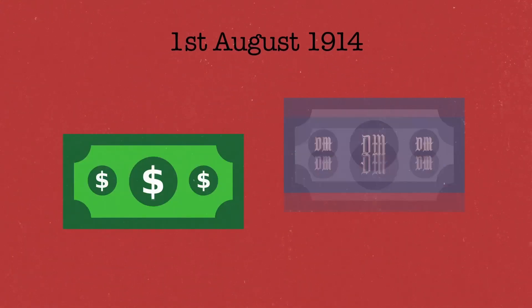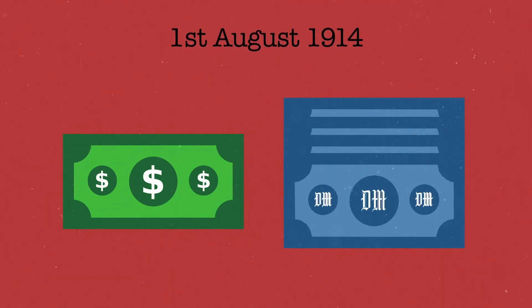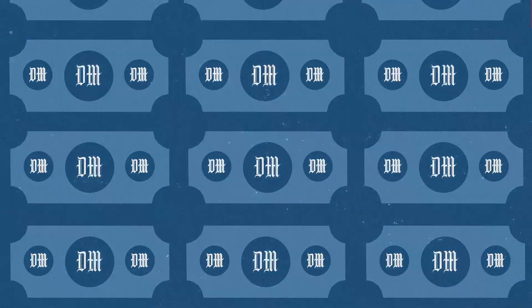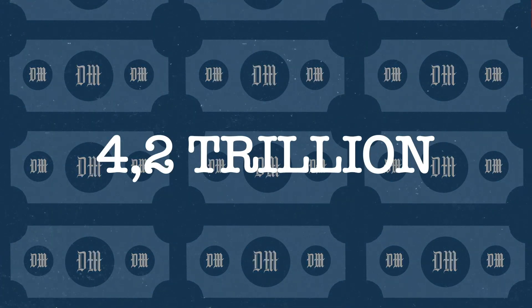On 1st August 1914, one dollar was at par with 4 marks and 20 fennigs. Nine years and three months later, in November 1923, one dollar was quoted at a staggering 4.2 trillion marks. In other words, the mark was no longer worth anything.